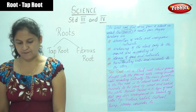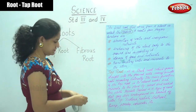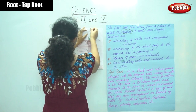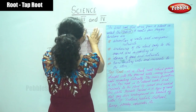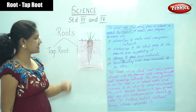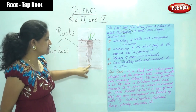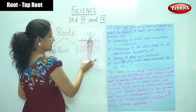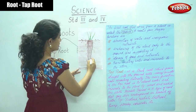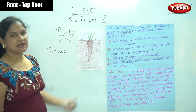This is the picture of a tap root. Tap root is a thick root which grows straight into the ground with many small roots sprouting laterally. You can see the root that grows below the ground — this is the tap root, and these are the small lateral roots.